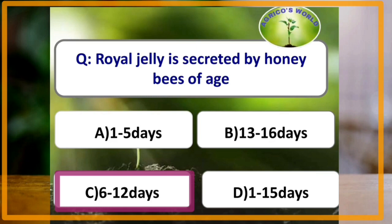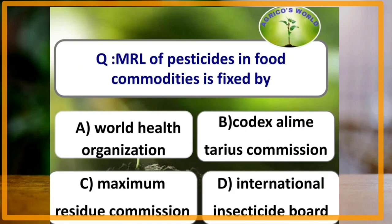The workers of age 6 to 12 days secrete royal jelly, which is responsible for the development of queen morphology. Maximum residue limit of pesticides in food commodities is fixed by the Codex Alimentarius Commission.